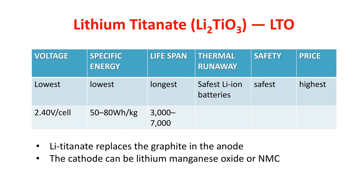Now coming to the properties shown in the table. First we will talk about voltage. The voltage for an LTO battery is lowest in comparison to other types of lithium-ion batteries — it's 2.4 volts per cell, while other types have a voltage greater than 3. Also, the specific energy of LTO battery is lowest, at 50 to 80 watt-hour per kg. To store the same amount of energy, LTO batteries will require a larger size or larger mass than other types.